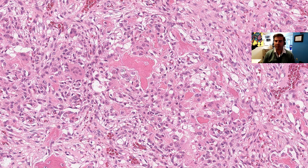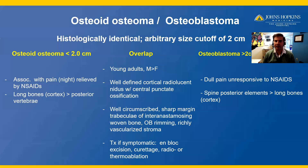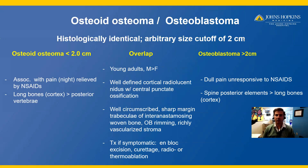Histologically, we have this circumscribed proliferation composed of disorganized inner anastomosing spicules of woven bone with osteoblastic rimming and a richly vascularized stroma, without cytologic atypia and without nuclear anaplasia. This is an osteoid osteoma or osteoblastoma, and that is a diagnosis arbitrarily designated by size. These are histologically identical, and we use a size cutoff of two centimeters.